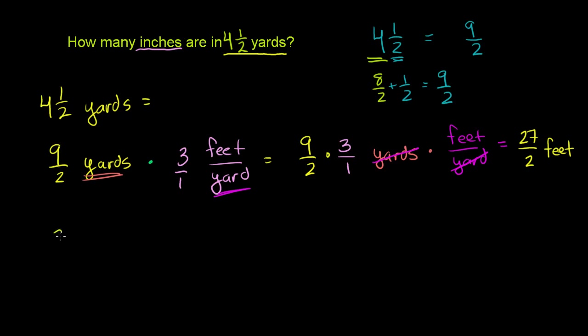So now we have 27 over 2 feet. And now we want to convert this to inches. And we just have to remember, there are 12 inches per foot. And we're going to want to multiply by 12. Because however many feet we have, we're going to have 12 times as many inches. If we have 1 foot, we're going to have 12 inches. 2 feet, 24 inches. 27 over 2 feet, we're going to multiply it by 12 to get the number of inches.